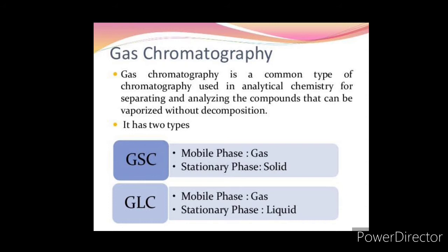The mobile phase is an inert gas like nitrogen which pushes the separated constituents out of the column and is fed to the detector. Signals from the detector are given to the recorder. The recorder plots a graph of detector response versus time. The plotted graph is known as a chromatogram.